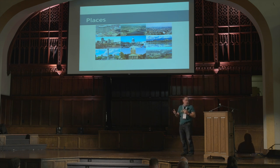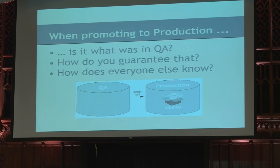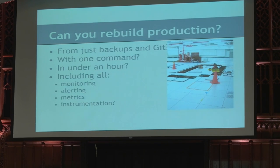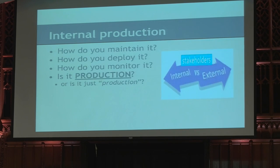So, places. Places are really important. The most important place we have as operations is production. When we put something in production, what do we know about it? Do we know it was what was in QA? Do we know it was what they actually QA'd? How do we know it got there, and how does everyone else know it got there? I like big red buttons — I like giving other people big red buttons to push so they can do my job, like promoting stuff to production. Speaking of production, how can you rebuild production? If the data center broke down, what now? How can we recover? It's really cool when we have a backup and we have Git.